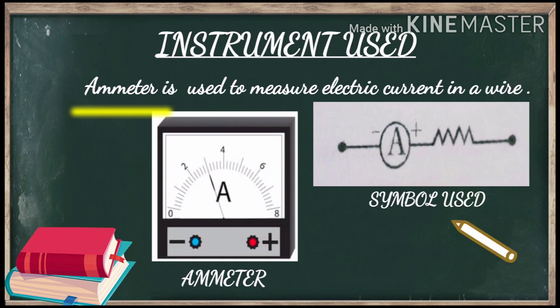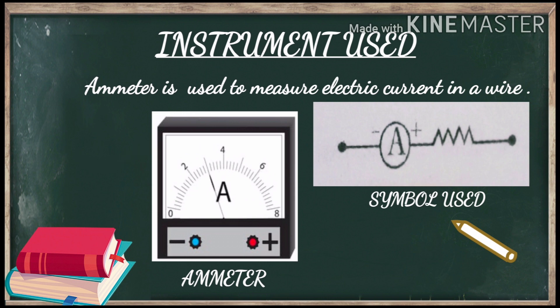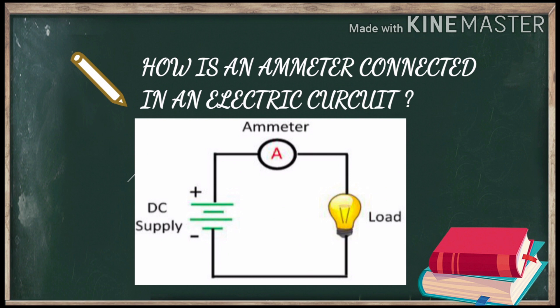The instrument used to measure electric current is an ammeter. It has two terminals: one positive and one negative, and this is the symbol used in a circuit. To connect the ammeter in an electric circuit, we connect the positive terminal of the ammeter with the positive terminal of the battery and the negative terminal of the ammeter with the negative terminal of the battery. This is how we connect an ammeter in an electric circuit.